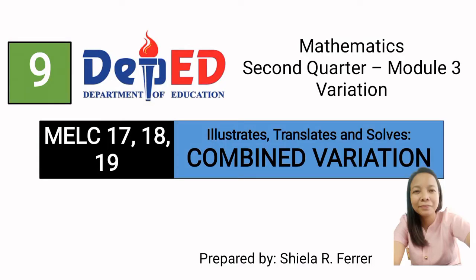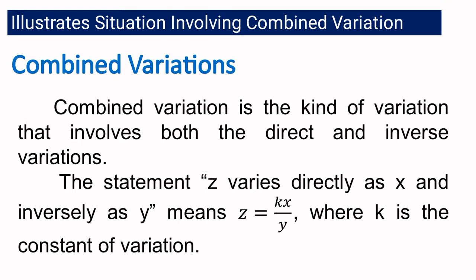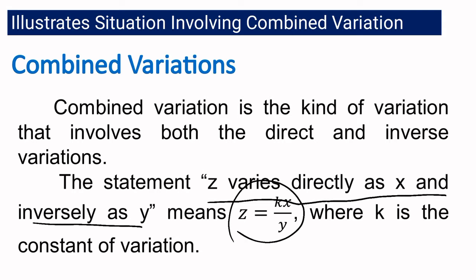Good day everyone, we are going to discuss today combined variation. This is the last kind of variation and the last topic in our module 3. Combined variation involves both direct and inverse variation — it is the combination of both. The statement 'z varies directly as x and inversely as y,' when translated into an equation, is written as z equals kx over y, where k is the constant of variation.